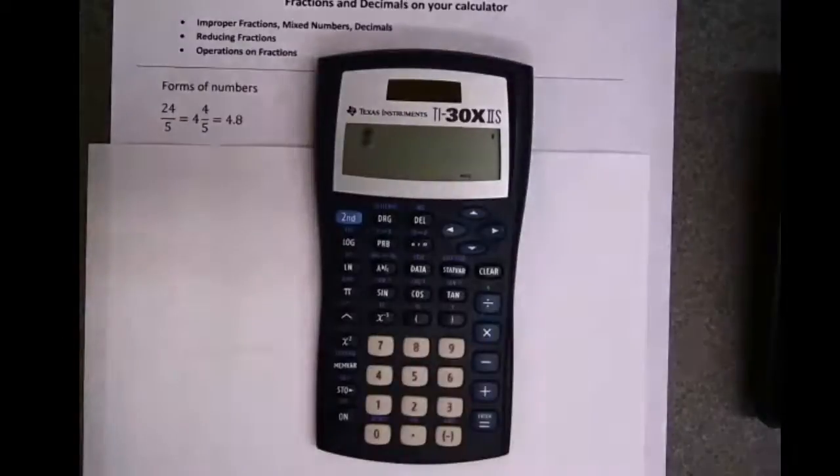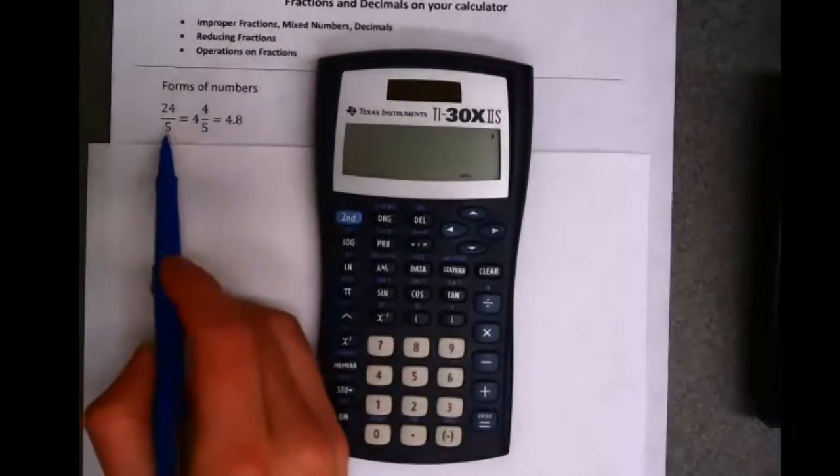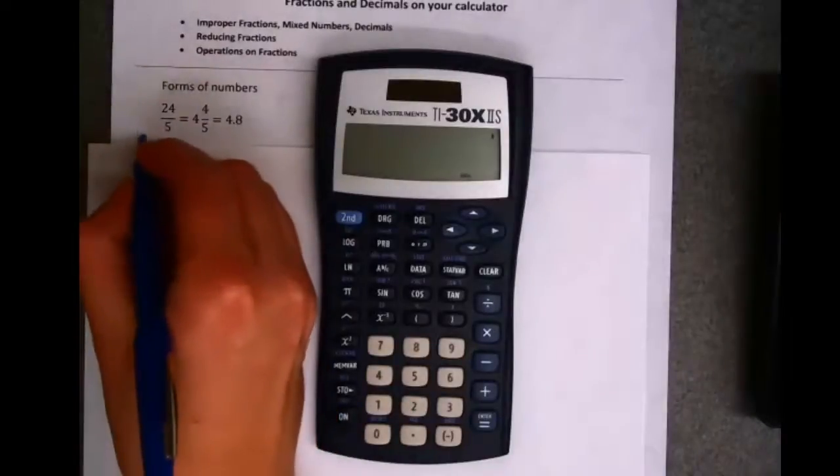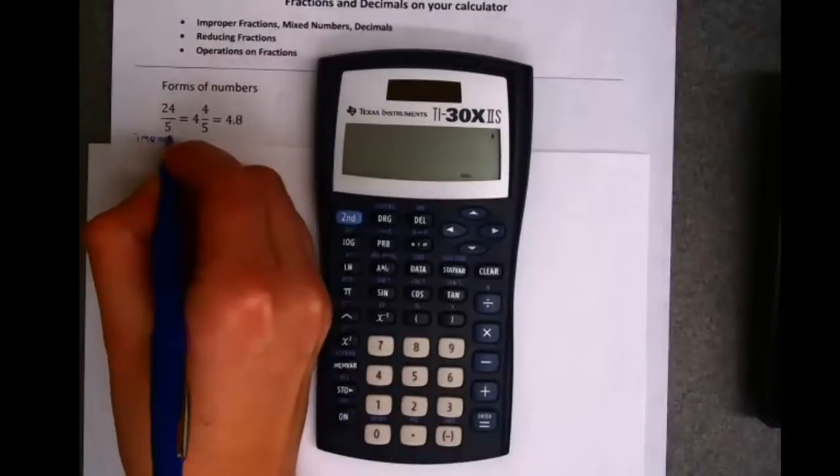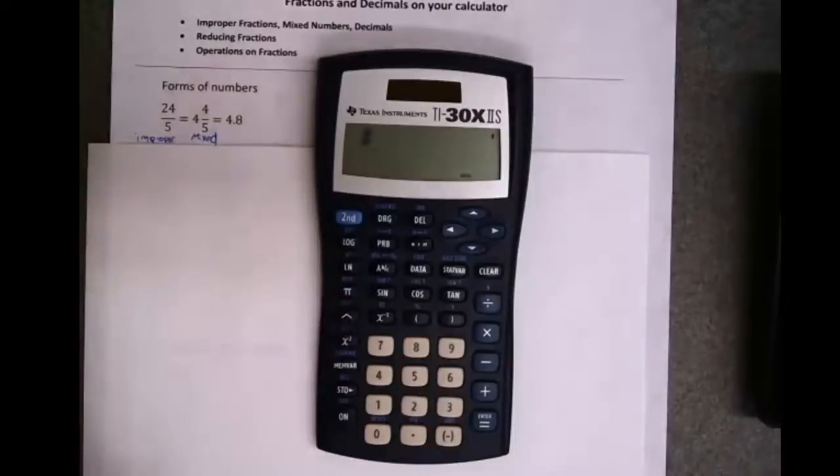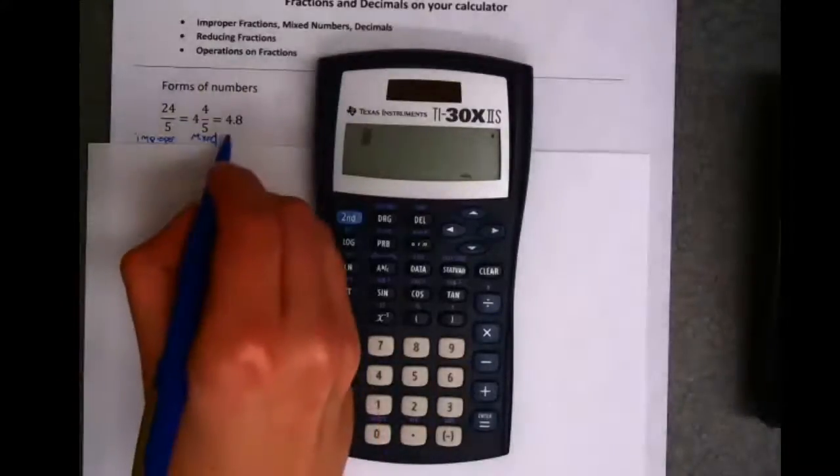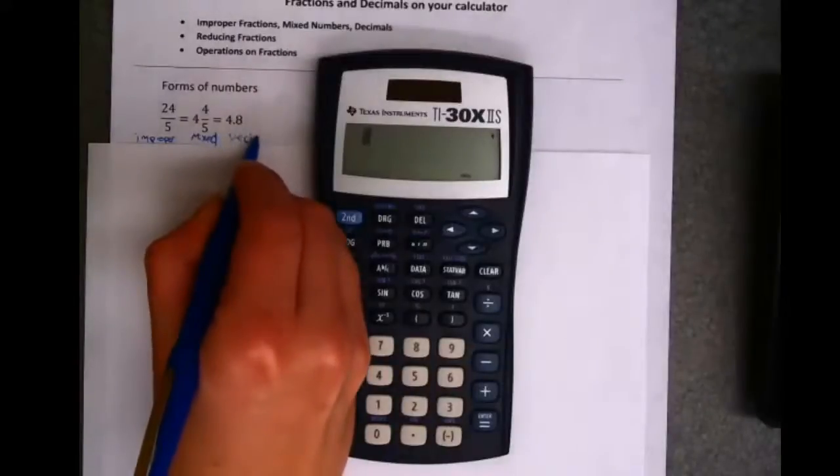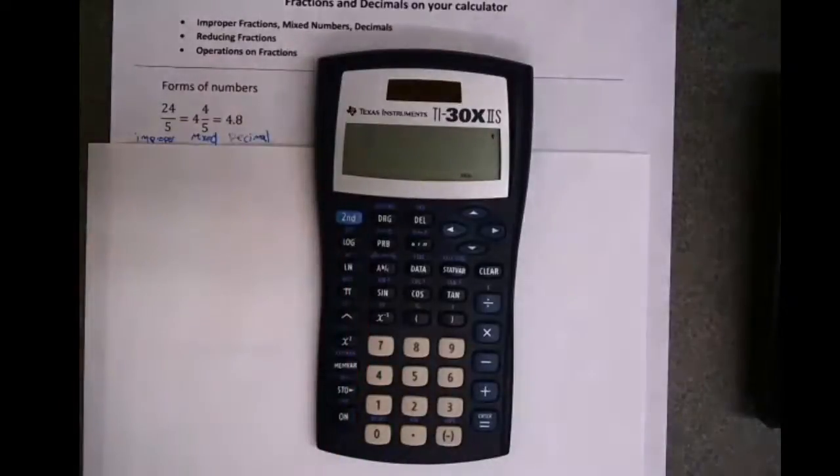Okay, so in this calculator, I can actually switch between multiple forms of the number. 25 fourths is what we call an improper fraction. That could also be written as 4 and 4 fifths, which is a mixed number. It could also be represented by the decimal 4 and 8 tenths, or 4.8.